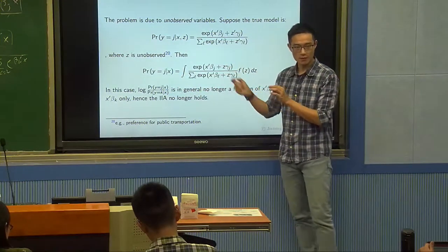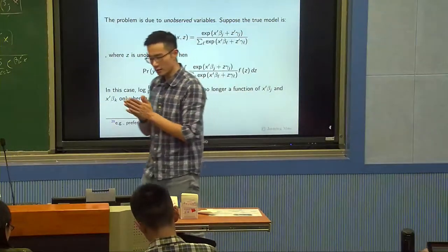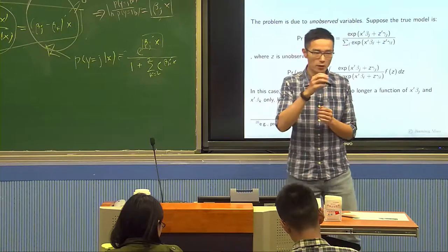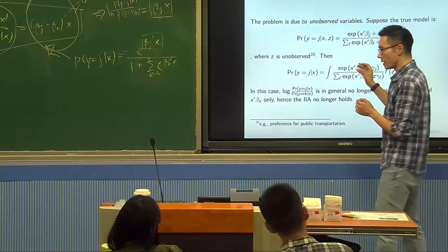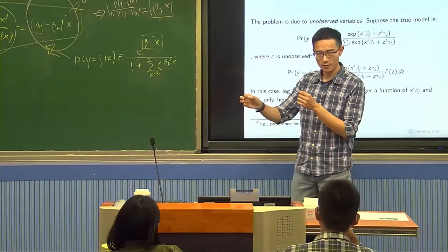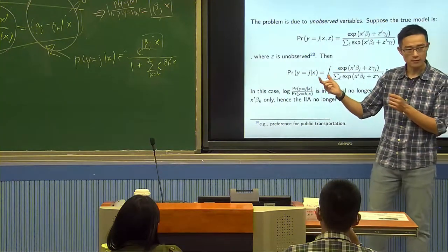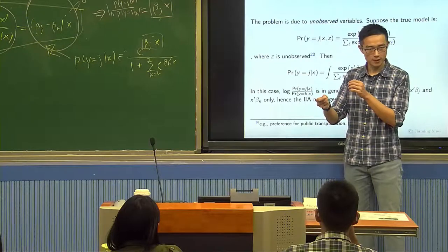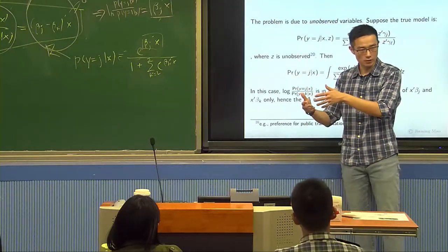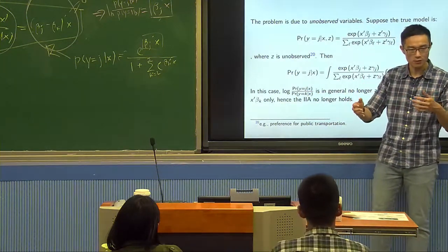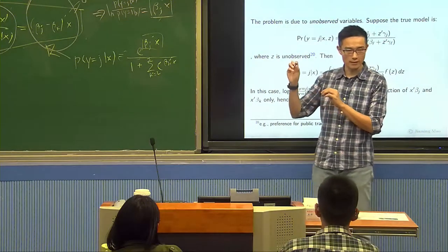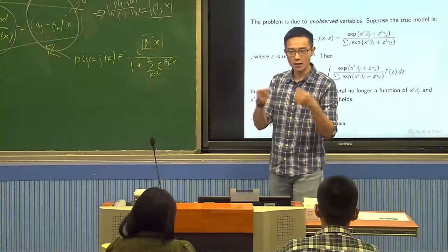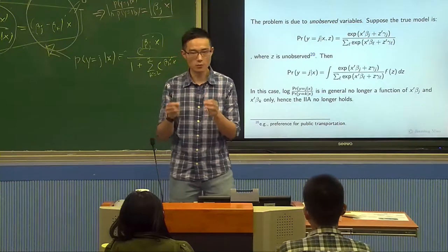The existence of an unobserved variable like z makes some choices more correlated than others, conditional on x. Bus and subway are both explained by z (preference for public transportation), making them more correlated with each other than with car. In the red bus/blue bus case, the two buses are almost perfectly correlated — perfect substitutes. The difference in how closely different choices are correlated is the root problem of IIA. IIA may not be a problem for in-sample prediction, but it will be a problem for counterfactual predictions involving adding or removing choices.